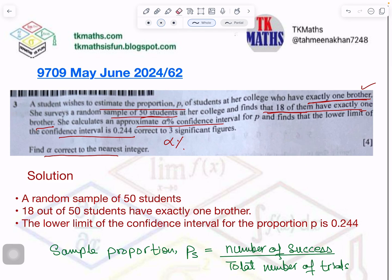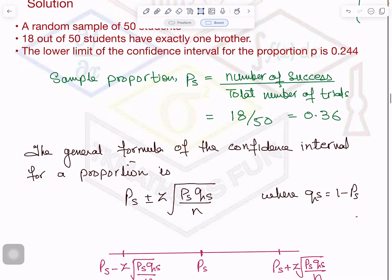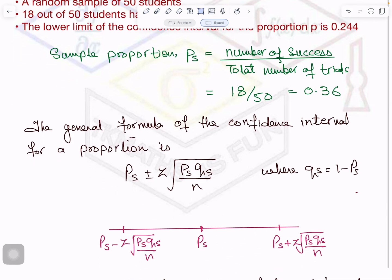So I have written here the given condition in red. And then after that, you can see I have told you how to calculate sample proportion. You know that 18 out of 50 have, so it is 0.36.